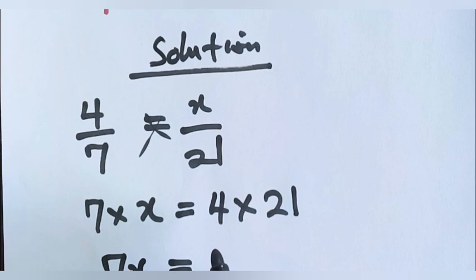That's equal to 84. 4 times 21 is equal to 84.